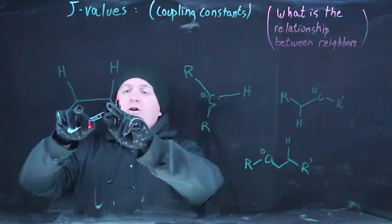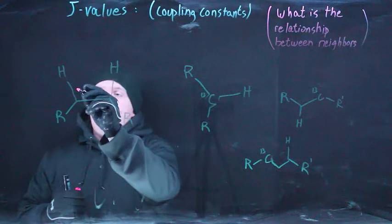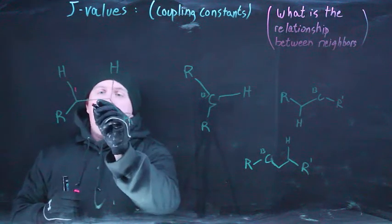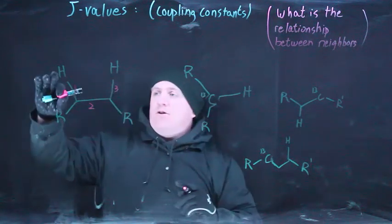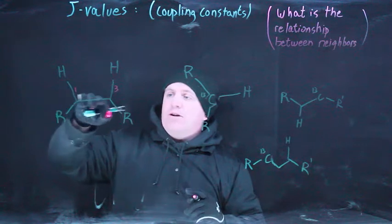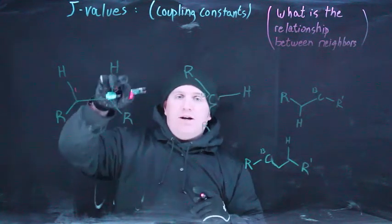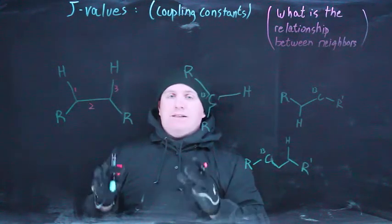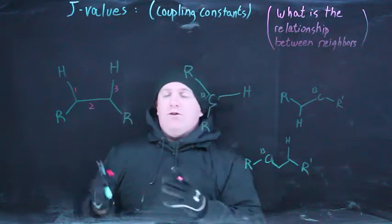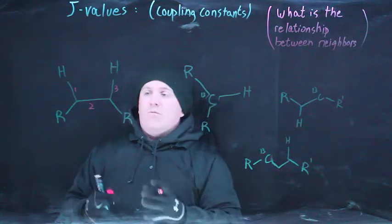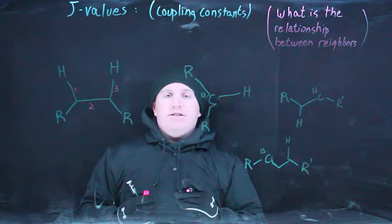Hydrogens that are on adjacent carbons - this distance, one bond, two bonds, three bonds, so hydrogen to carbon, carbon to carbon, carbon to hydrogen. This three bond relationship is in many ways the normal J value, the normal coupling constant, the normal relationship between hydrogens that we're going to see a lot of.